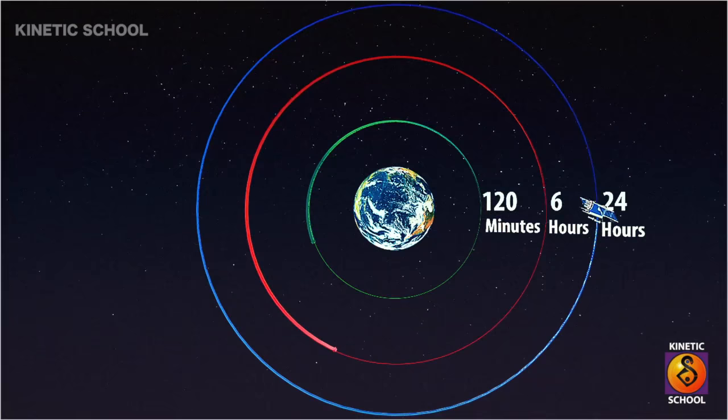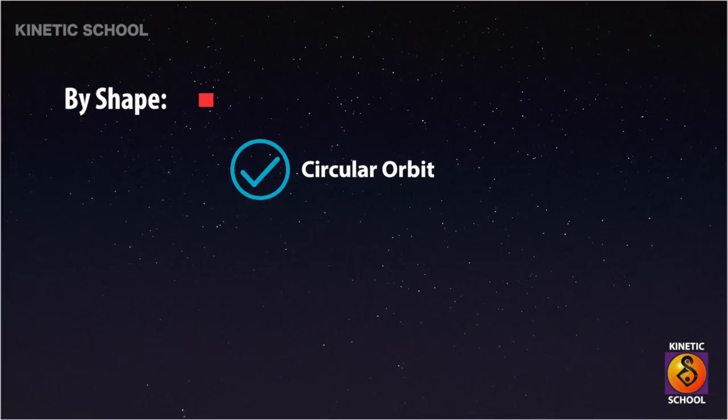Orbits are also classified into two types on the basis of shape: circular orbit and elliptical orbit.